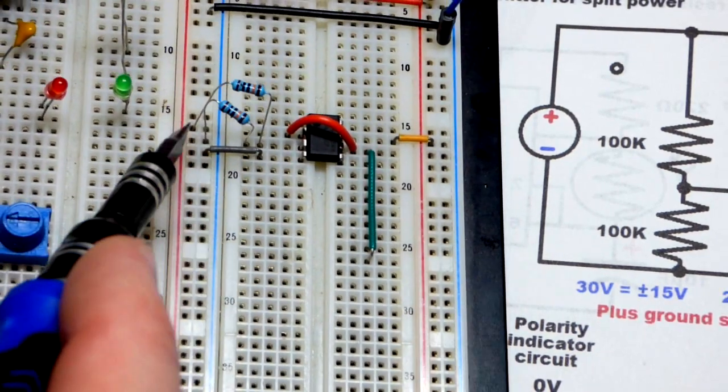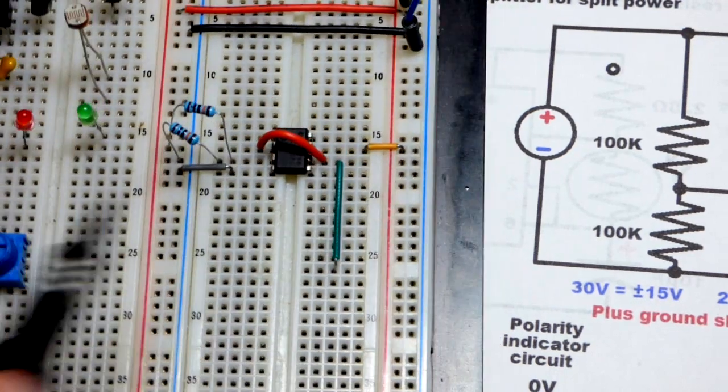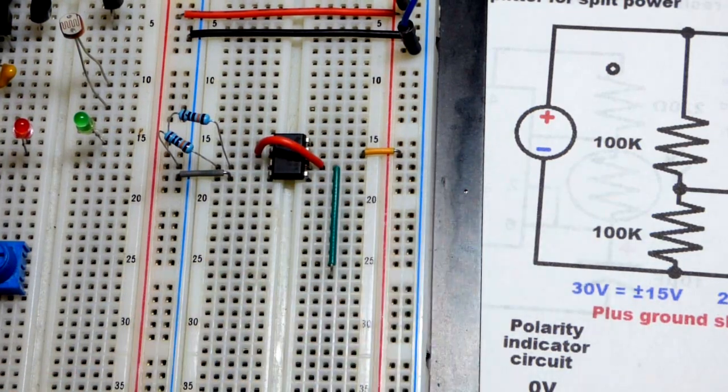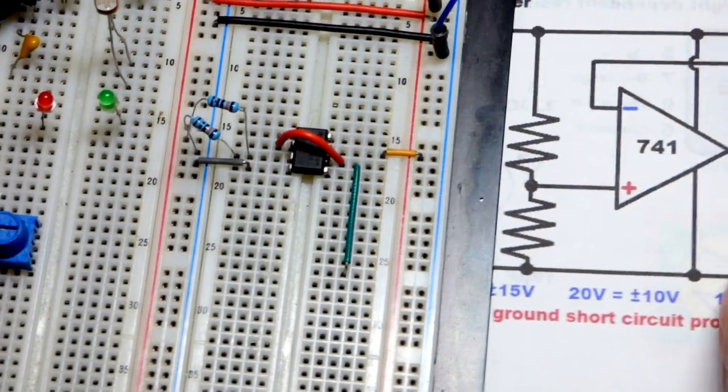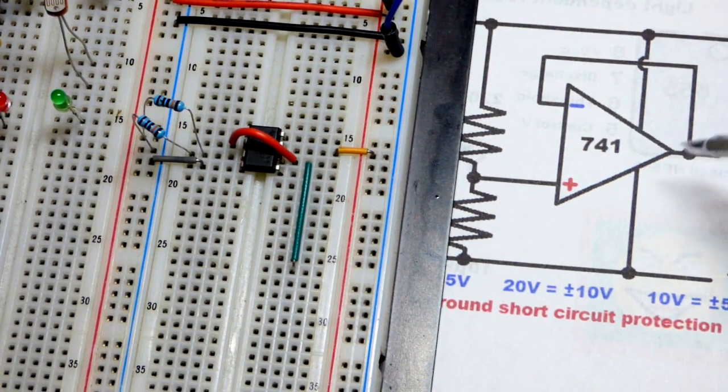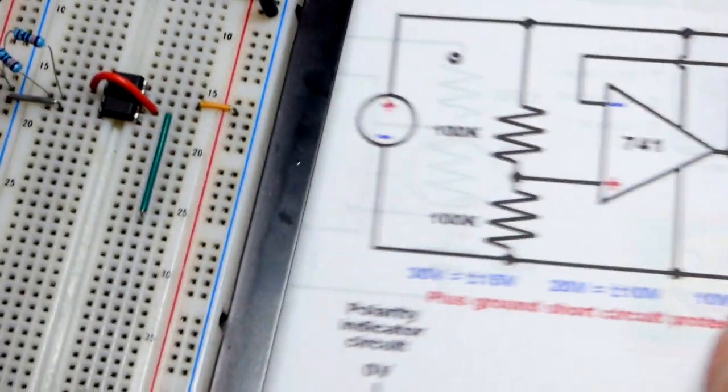That resistor to the negative rail, that resistor to the positive half of the power supply voltage. Since we have the feedback to the inverting input from the output, it's going to change the output as needed to hold those voltages equal.